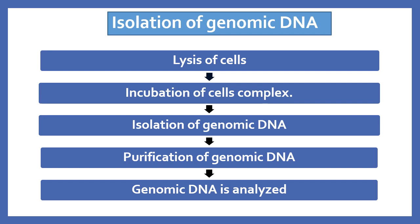The first step is isolation of genomic DNA. For isolation, lysis of the cell with a detergent-containing lysis buffer is used. Incubation of the cells with a denaturation buffer containing protease releases the genomic DNA from the DNA-protein complex. As we know, DNA is always bound to proteins inside the nucleus. Then the isolation of genomic DNA by absolute alcohol precipitation. After that, the DNA has to be purified using a phenol-chloroform mixture.